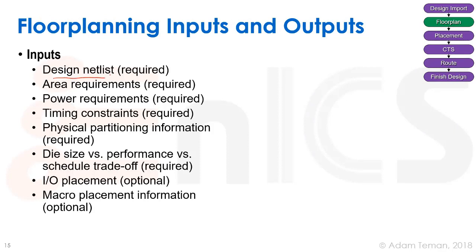The inputs to floor planning include a design netlist — which tells us what types of gates we have to place and how many — and area requirements, which can be driven by the netlist or by the system based on what the package looks like. We also need power requirements: how much current we'll be dissipating, what IR drop we can tolerate, and timing constraints from our SDC file.